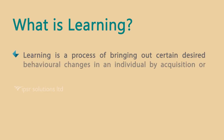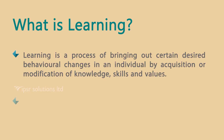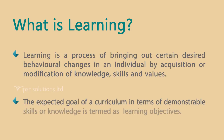We will start with what is learning. Learning is a process of bringing out certain desirable behavioral change in an individual by acquisition or modification of knowledge, skills, and values. This statement reveals two major aspects. The first is that learning is a deliberate process which focuses on certain desirable behavioral change, and it is this desirable behavioral change that we term as learning objectives. When viewed from a learner's point of view, we restate it as learning outcome.